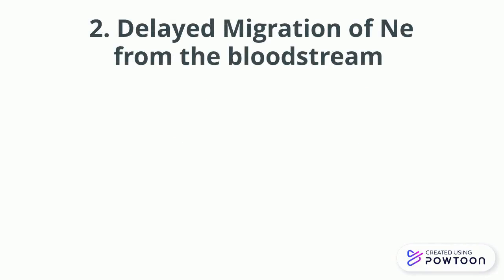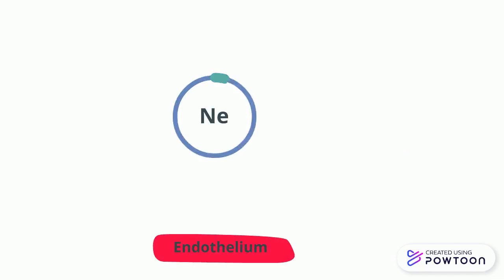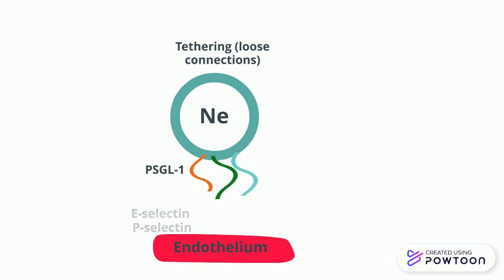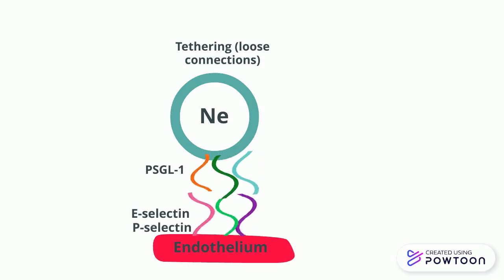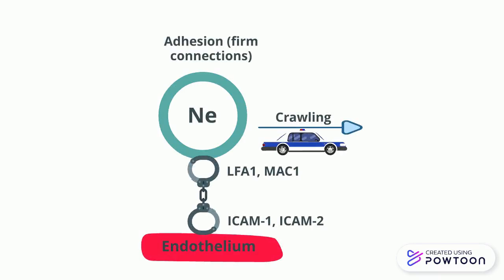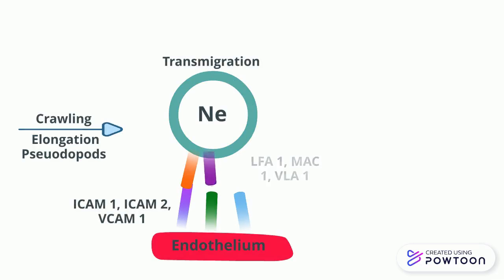The second mechanism is delayed migration of neutrophils from the bloodstream. But how do neutrophils migrate from the bloodstream to the site of accident or infection? In this journey, neutrophils follow five steps. The first one is tethering, which creates loose bindings of neutrophils through PSGL-1 and endothelial cells through E- and P-selectin. This ensures that the next step, rolling, will be made in the direction of the bloodstream. Afterwards, neutrophils and endothelial cells express integrins like LFA-1, MAC-1, and the ICAM family that ensure firm adhesion. The next step is crawling of neutrophils through elongation and spreading of pseudopods, and lastly, transmigration through the molecules of adhesion.